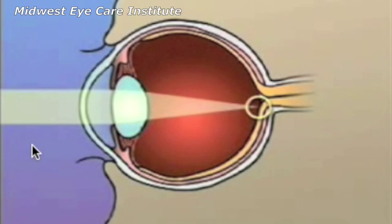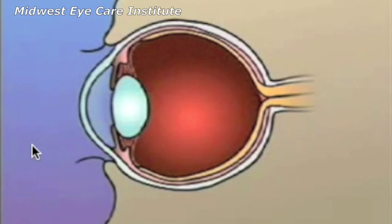There are many common problems which will prevent light rays from falling precisely on the retina. Three conditions which we commonly see in people seeking freedom from glasses are myopia or nearsightedness, hyperopia or farsightedness, and astigmatism.